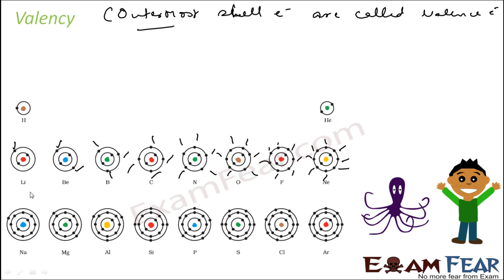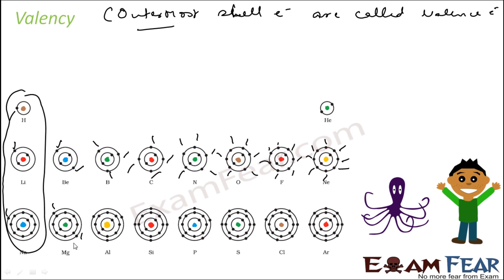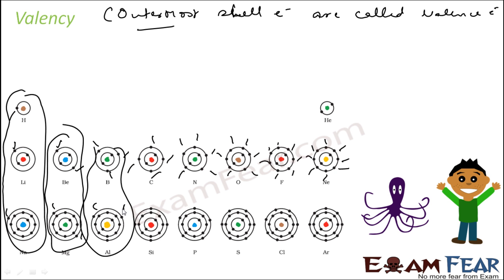Similarly, sodium will also have 1 valence electron, and hydrogen will also have 1 valence electron. Any element in this particular period will have 1 valence electron. Beryllium and magnesium both have 2 valence electrons. Boron and aluminium both will have 3 valence electrons. So valence electron is nothing but the number of electrons present in the outermost shell.